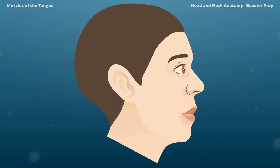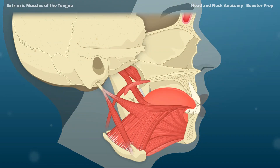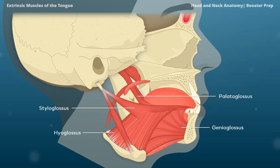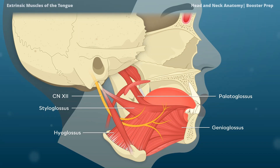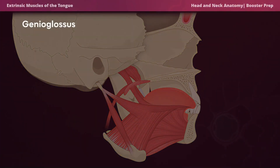The extrinsic muscles of the tongue attach the tongue to other structures. The extrinsic muscles include the genioglossus, the styloglossus, the hyoglossus, and the palatoglossus. All of these muscles are innervated by cranial nerve 12, the hypoglossal nerve, except for the palatoglossus.